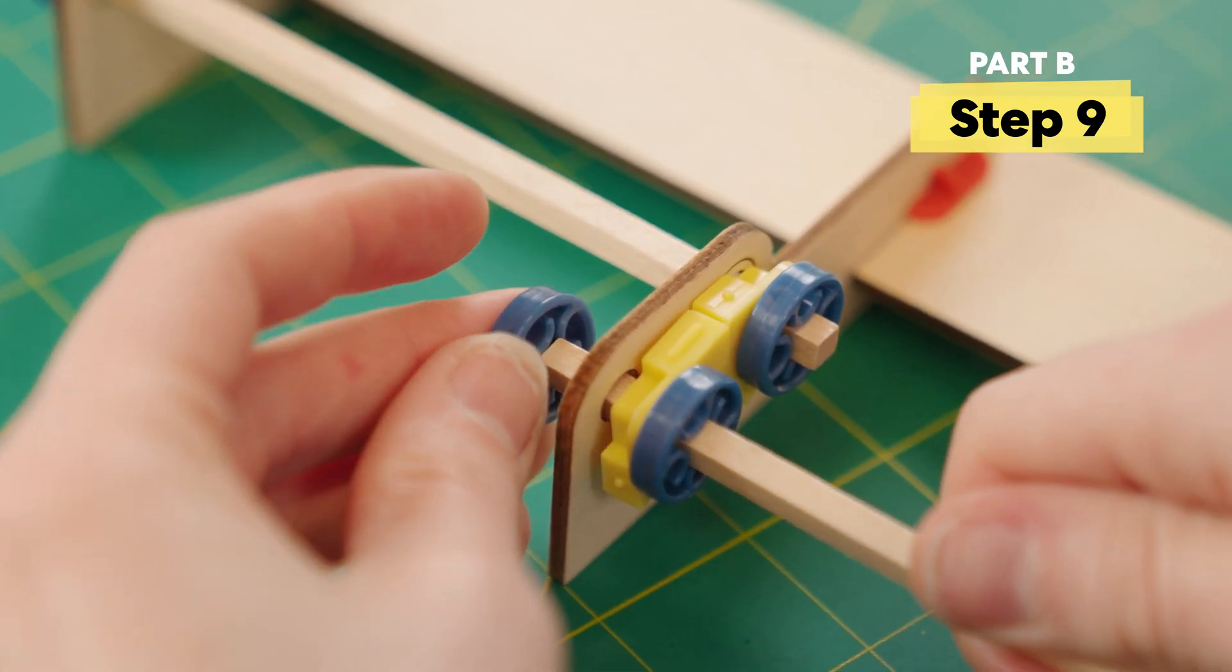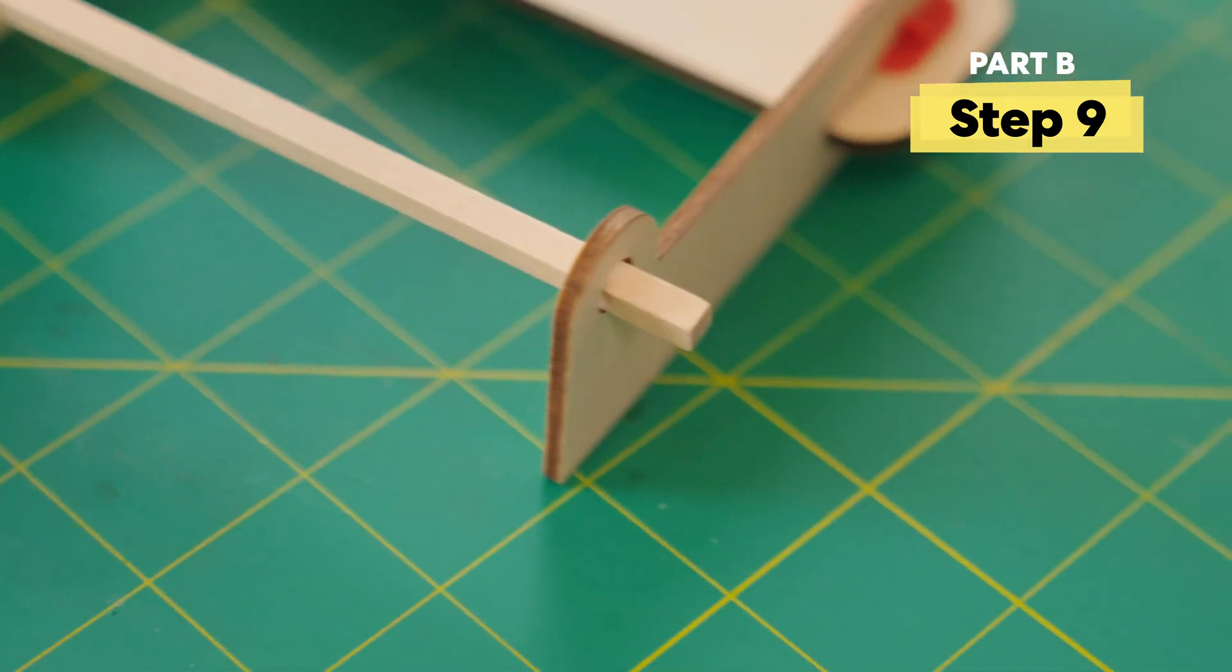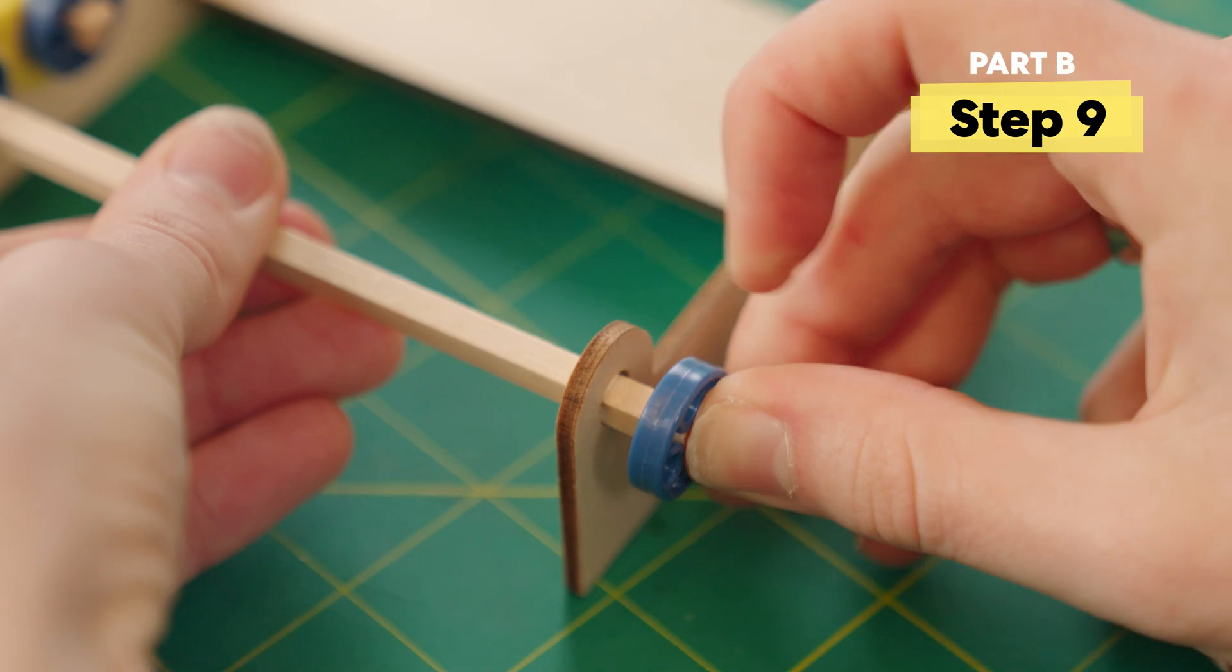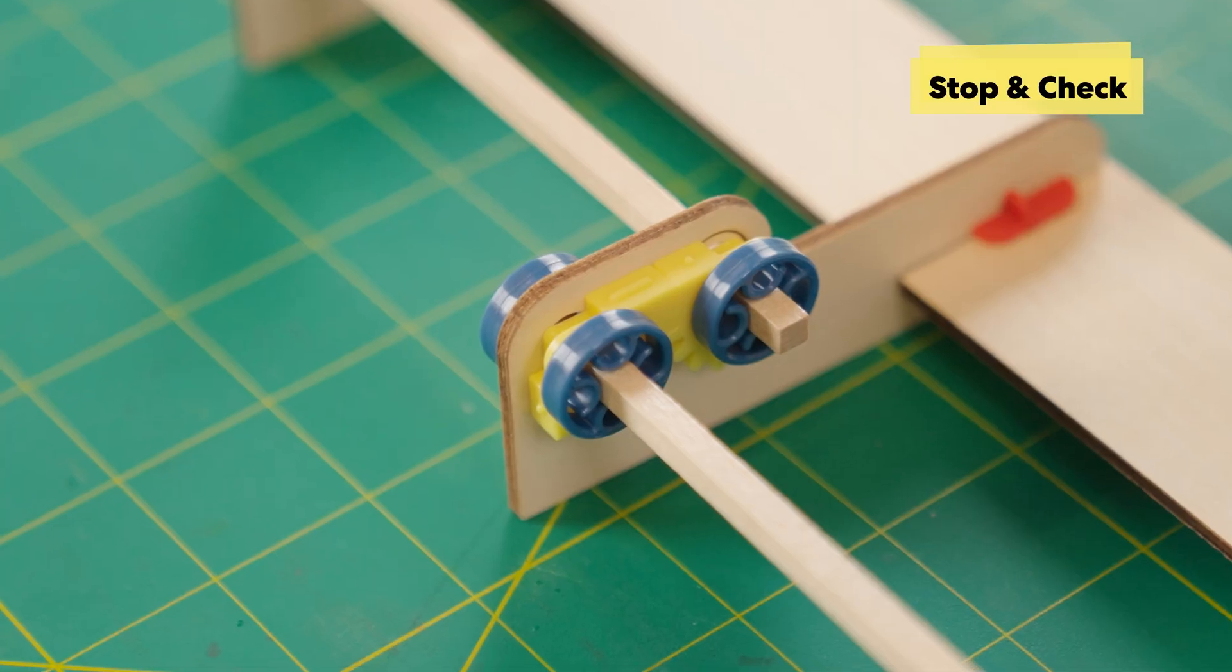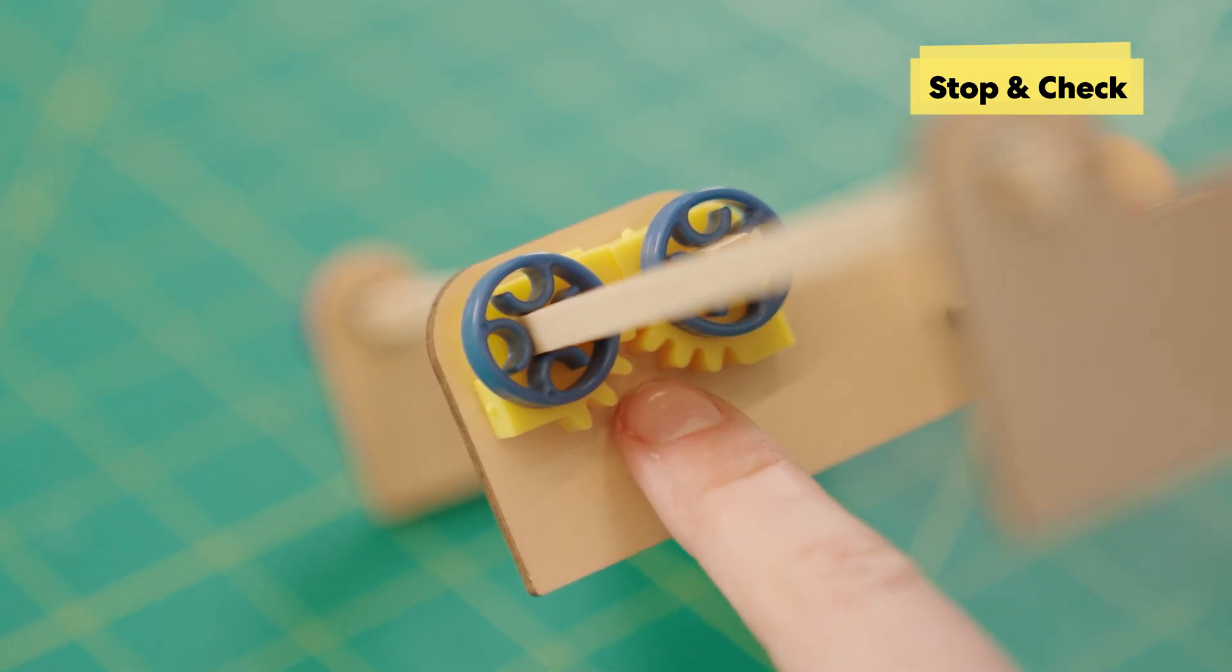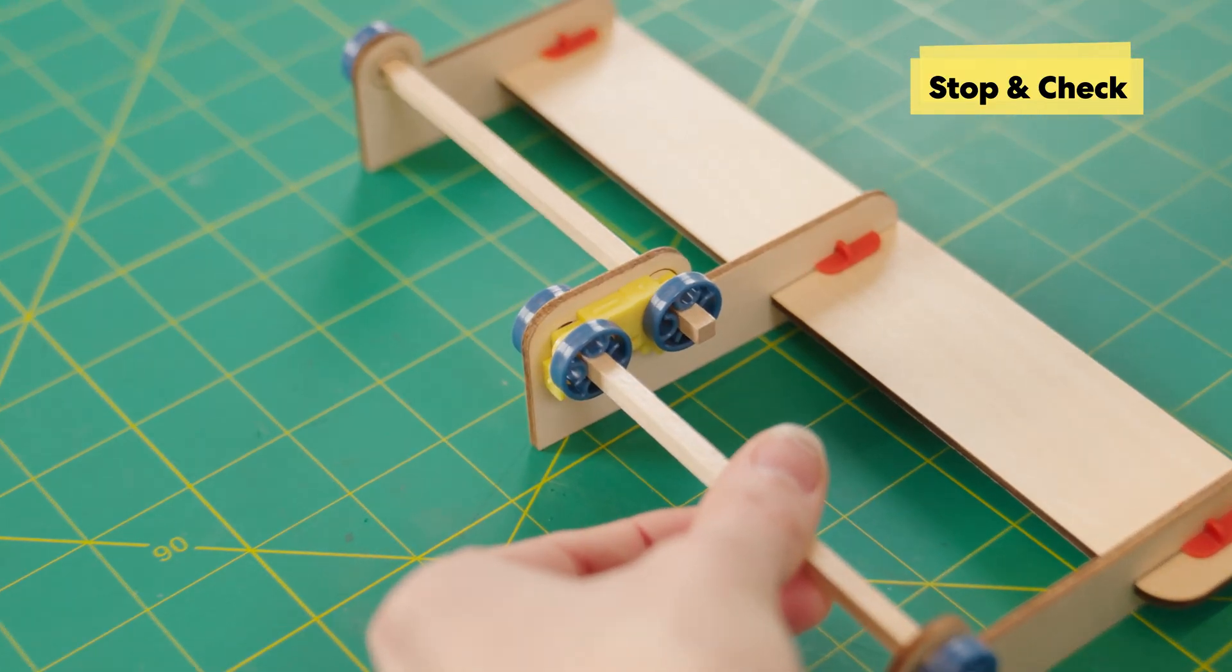Alright, now that those gears are meshing, we can secure it in place with two more blue rings. Double check that your gears are matching up just like this. When you spin one dowel, it should be able to spin the other one.